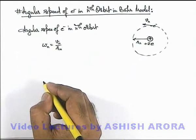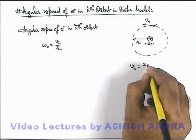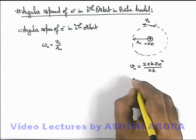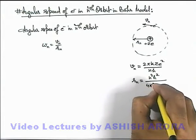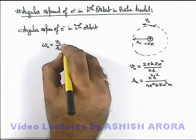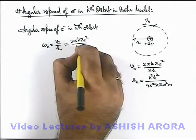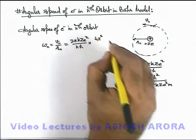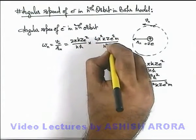Now we substitute the values of v_n and r_n, which we already calculated. v_n = 2πkZe² / (nh), and the radius of the n-th orbit is r_n = n²h² / (4π²kZe²m). On substituting, we get: omega_n = (2πkZe² / nh) multiplied by the reciprocal of r_n, which gives (4π²kZe²m) / (n²h²).